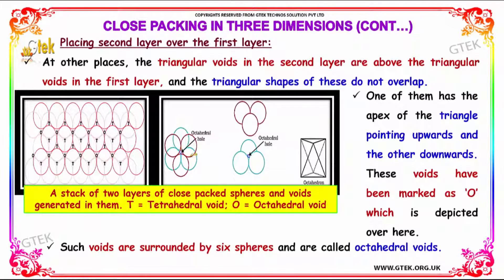At other places, the triangular voids in the second layer are above the triangular voids in the first layer, and the triangular shapes do not overlap. One has the apex of the triangle pointing upwards and the other pointing downwards. These voids are marked as O, and since they are surrounded by six spheres, they are called octahedral voids or holes.